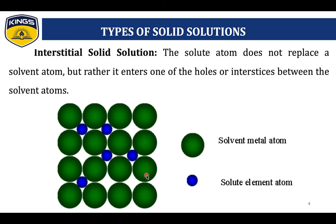Coming to the Interstitial Solid Solution, the solute atom does not replace a solvent atom, but rather it enters one of the holes or interstices between the solvent atoms. In this diagram, we can clearly note that in the crystal structure, the atomic arrangements are very proper. In between the solvent metal atoms, some solute elements — the blue color atoms — are intersticed between the solvent atoms.